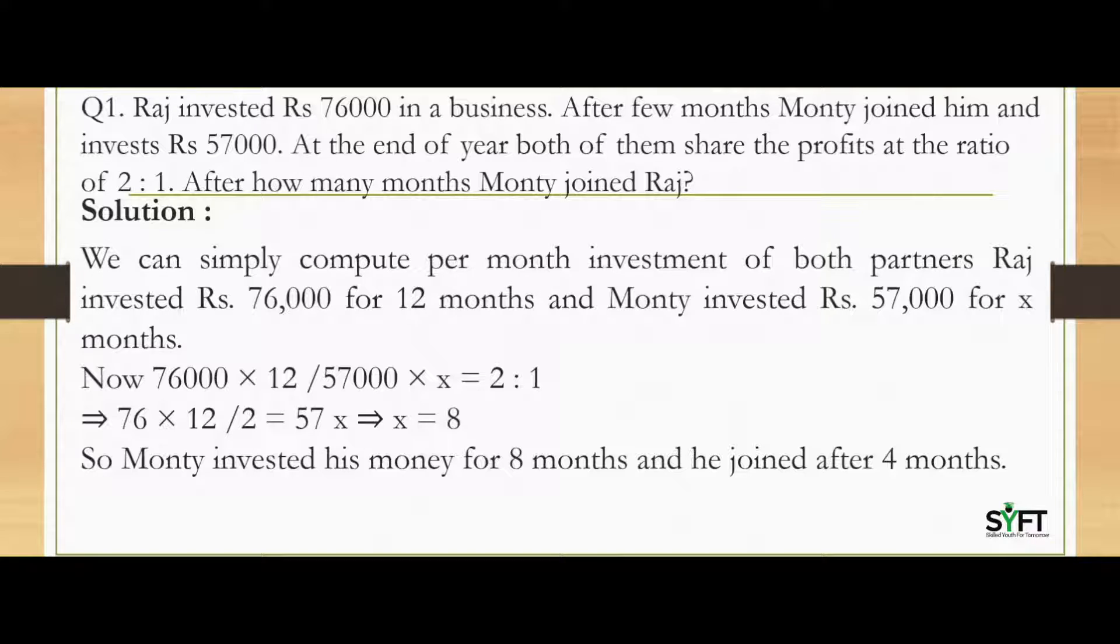Here in this question, it's saying that Raj invested Rs.76,000 in a business. After few months, Monty joined him and invests Rs.57,000. At the end of the year, both of them share the profits at the ratio of 2 is to 1. After how many months Monty joined Raj?